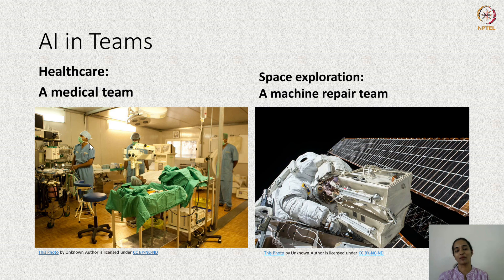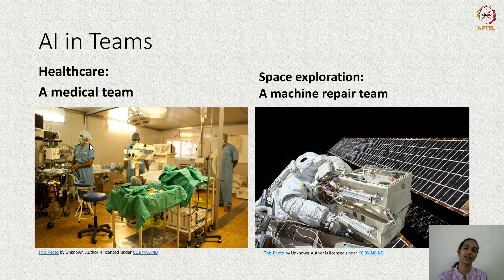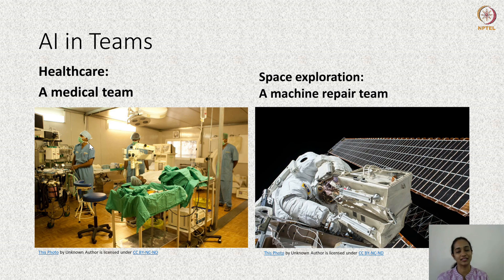In both examples — healthcare as well as space exploration — the AI is a team member, and the human team members are dependent on the AI for taking correct decisions. For this reason, we can say that the AI is an integrated team member. Having seen these two examples, let us now proceed to understand inputs and processes in human-AI teams.